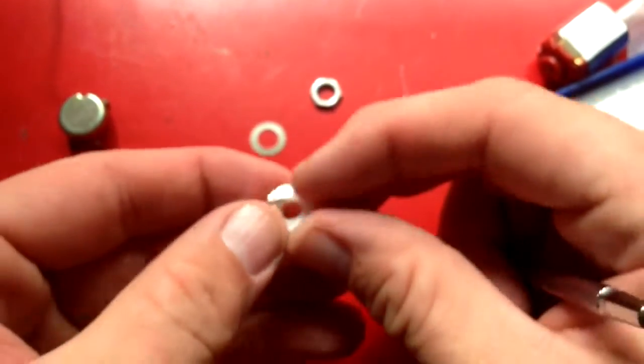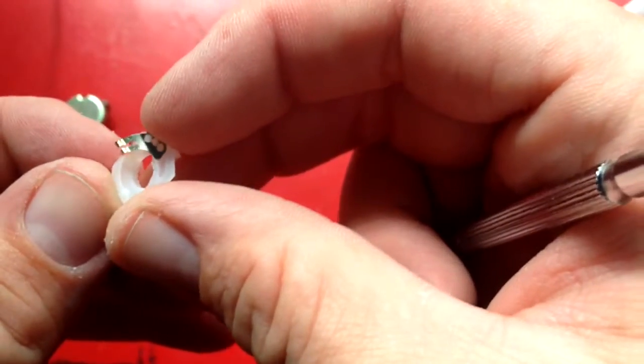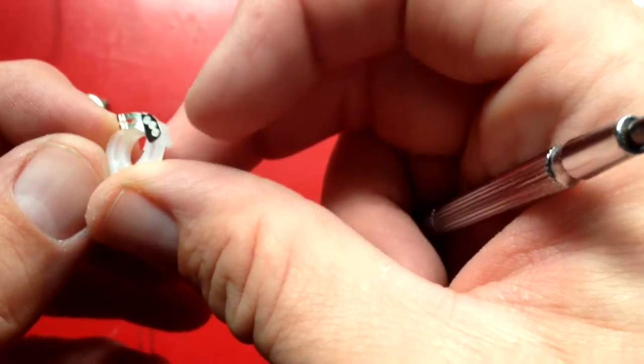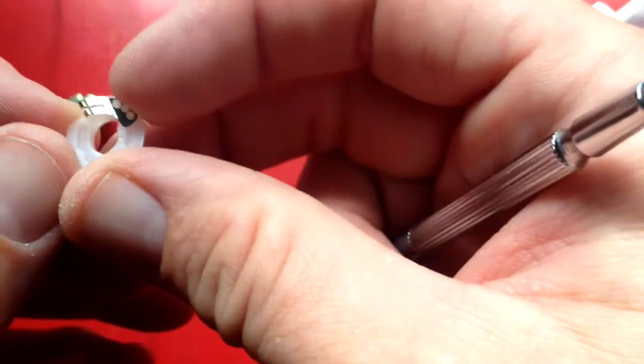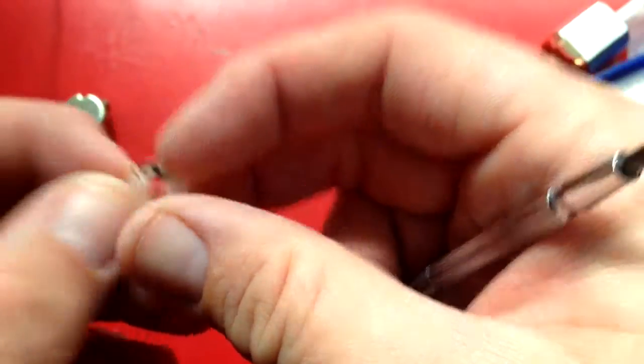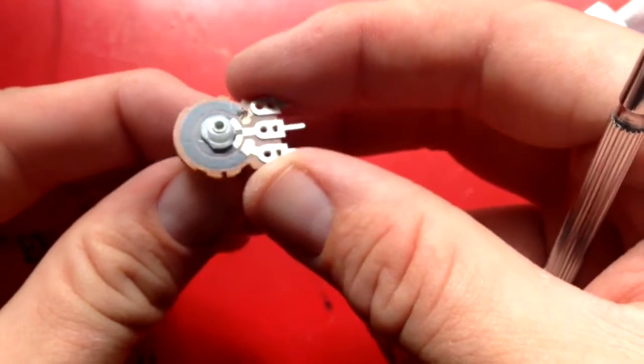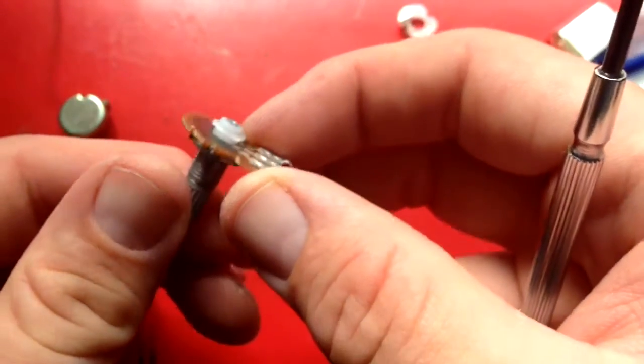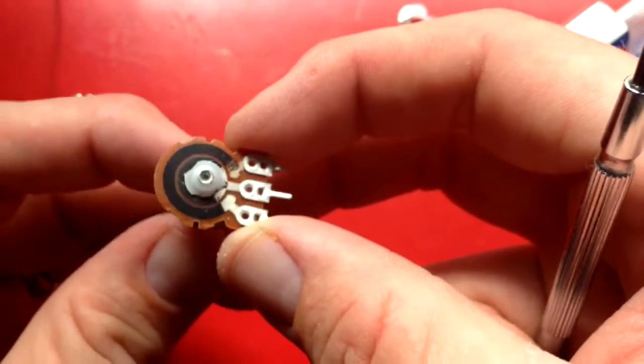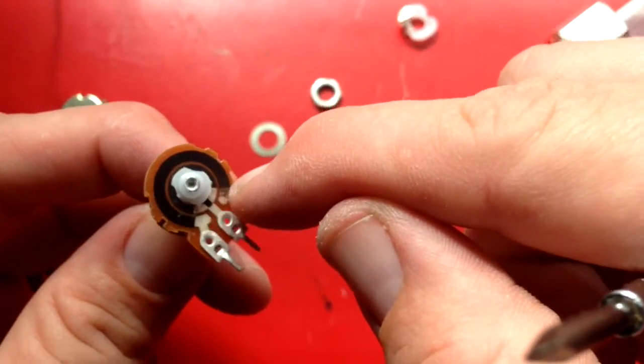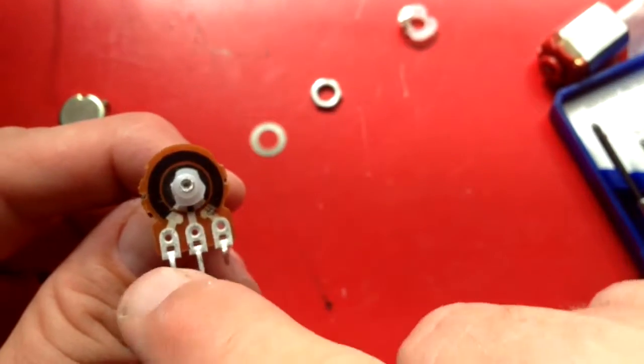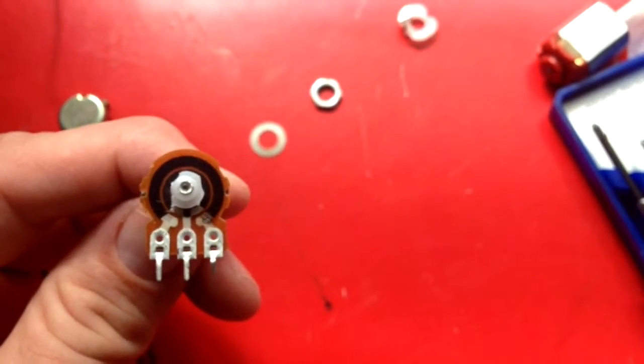There's the contacts, one to the other, pretty simple design. Here's the resistant part of the potentiometer and the leads and how they connect.